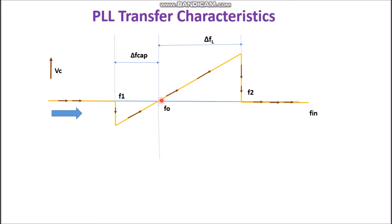If the frequency is increased further beyond F0, there will be a difference, so a positive error voltage is generated. It will continue until it reaches frequency F2, which is the edge of the lock range. It started from capture range at F1, and as the frequency difference increased up to the lock range, it was able to track. At F2, it loses lock and suddenly drops back to the free running frequency, remaining there as frequency continues to increase.